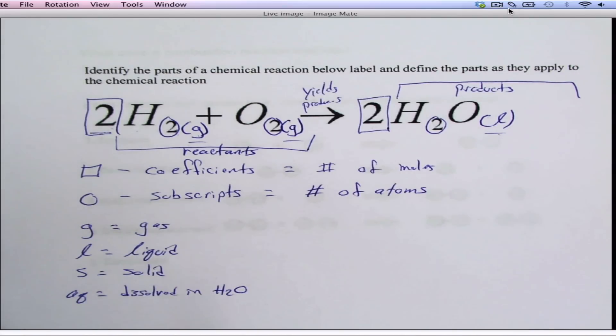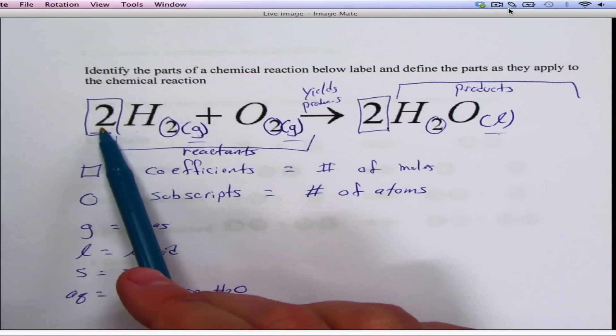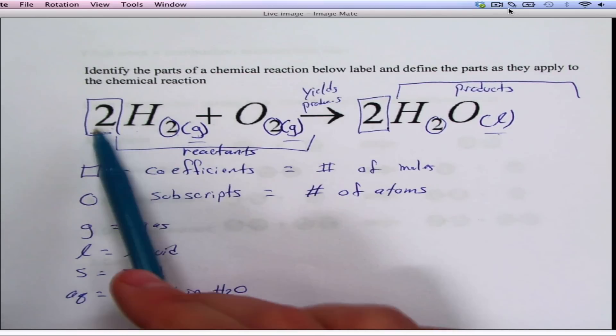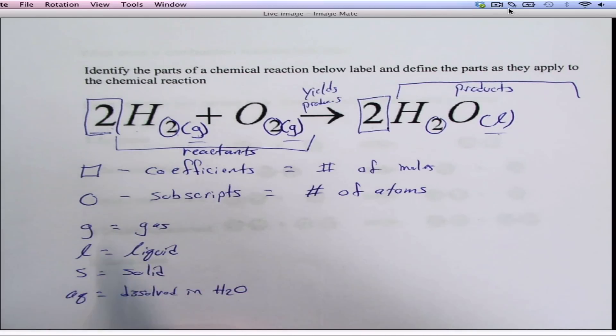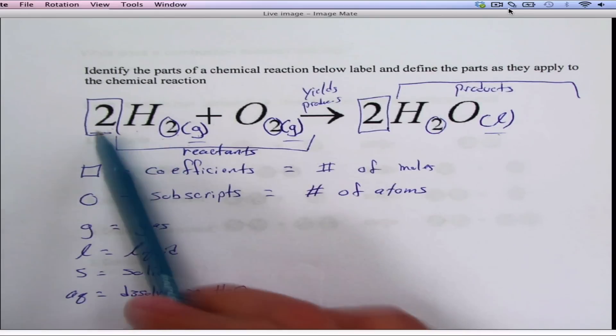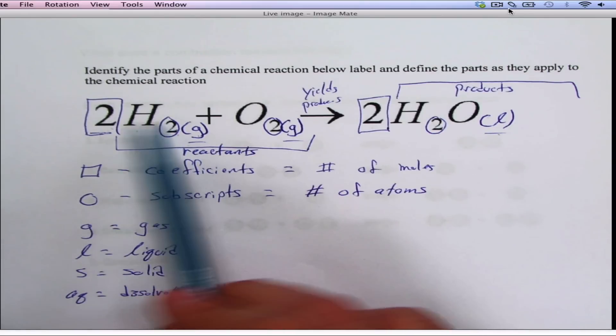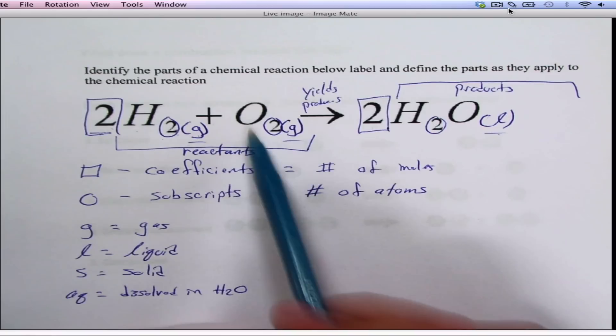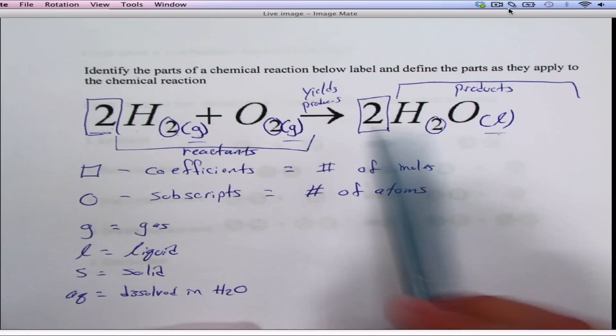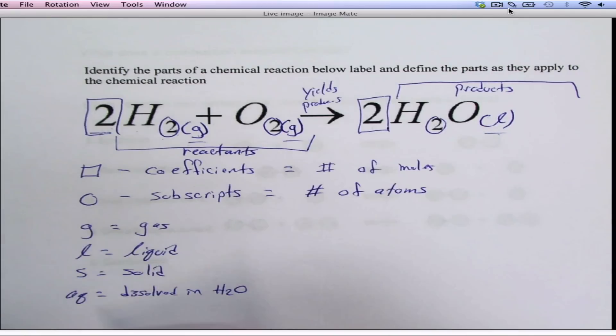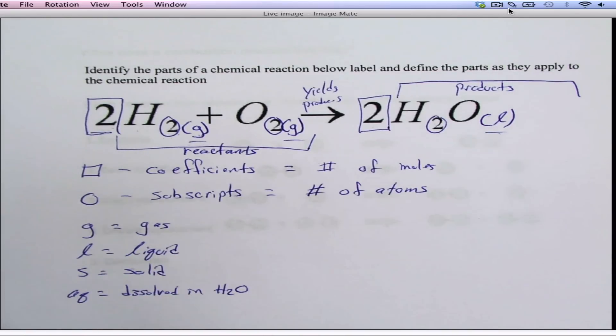So those are the basics. Now the question is, can you tell me how many atoms and moles and all that stuff kind of works out. You've got to think that there's a number in front of the formula, you multiply that into the formula. For example, there's actually four atoms of hydrogen: two atoms times two. There's two atoms of oxygen, and four hydrogens here, but two oxygens. So those coefficients distribute into the chemical compound.